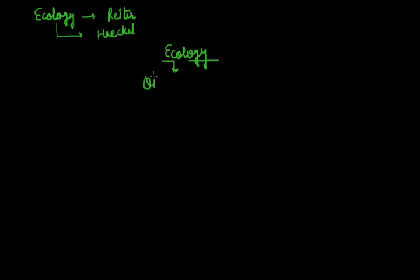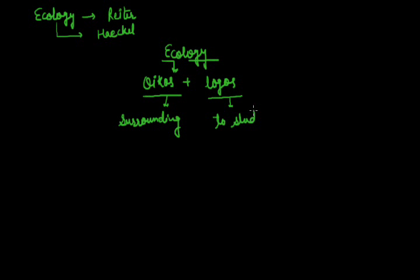Study about all these is done in a branch of science and that branch of science is called as ecology. This term was first of all given by, and this term was clarified by exactly the meaning of ecology. Eco exactly originates from a Latin word called as oikos and another word is locus. Oikos means surrounding, while locus means to study.